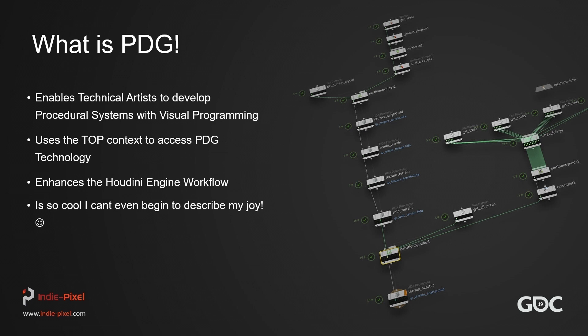I created ProTrack — a procedural track building system — and I wrote a C-sharp layer on top of the Houdini engine so that designers didn't have to drag and drop HDAs into the scene. It took me about a month to build that whole C-sharp layer, and it was there just to manage all of the Houdini engine assets. PDG takes care of that, so I don't have to do that anymore.